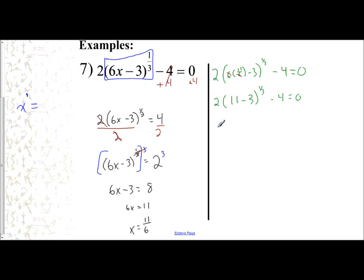11 minus 3 is 8, so I have twice 8 to the one-third power, minus 4 should equal 0. And 8 to the one-third power is the cube root of 8, which is 2. So I'm left with 2 times 2, which is 4. So 4 minus 4, does that equal 0? Yes, it does. 0 does equal 0.